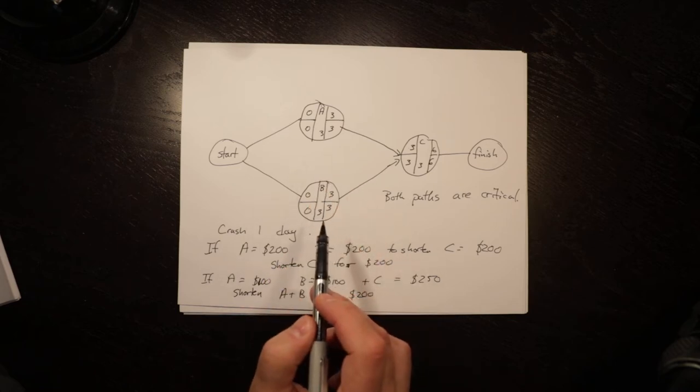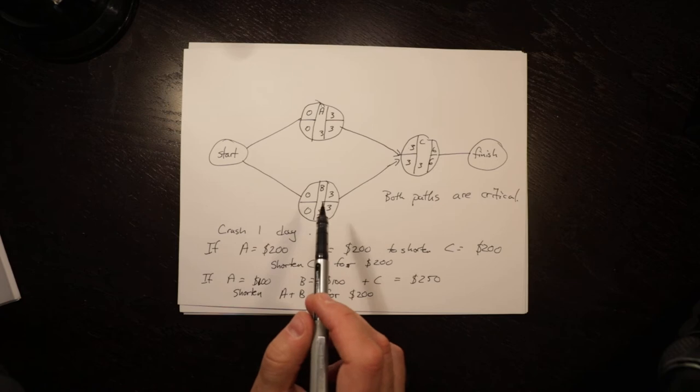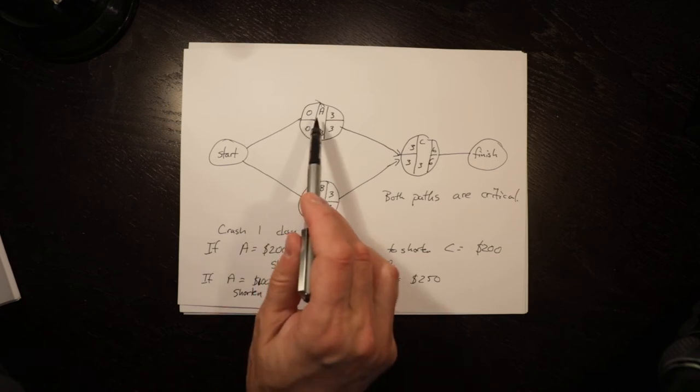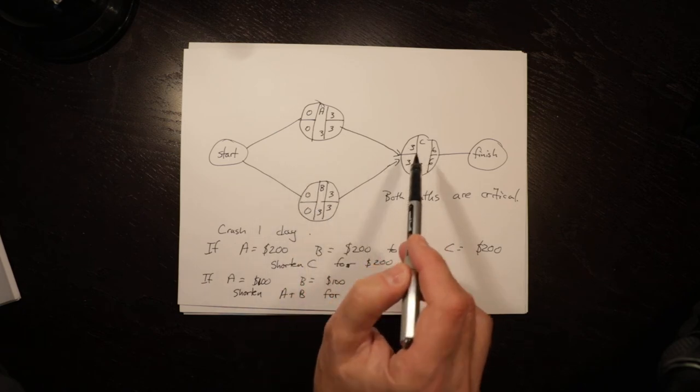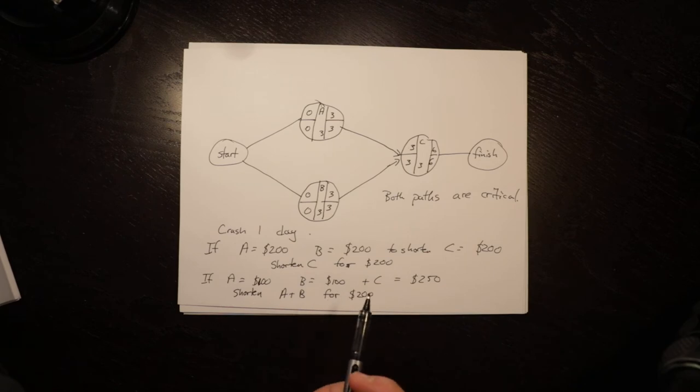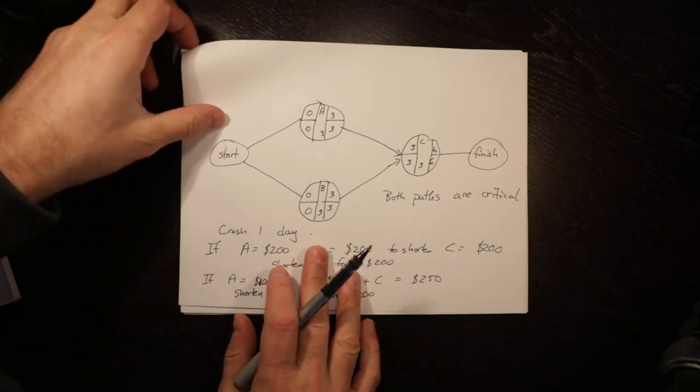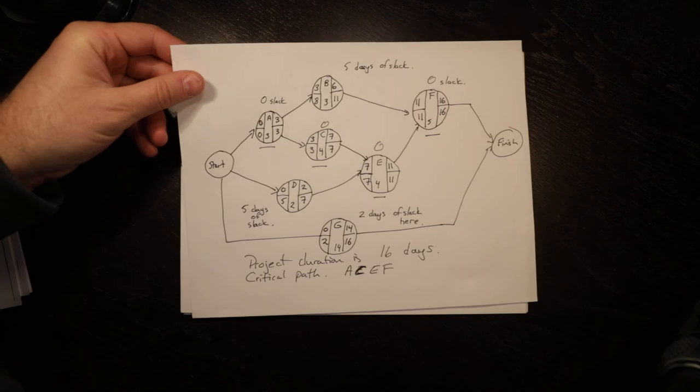In this circumstance, this is one of the only tricks that you'll find in crashing a project. Sometimes it's cheaper to crash two individual tasks or activities on different critical paths than it is to pick the one that is common on both critical paths. So that's always a trick to watch for as you're shortening.